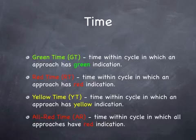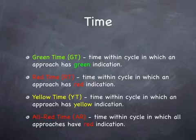Green time is the time in which the cycle has a green indication on an approach. Red time is the time in which the cycle has a red indication. Yellow time is the time in the cycle which has a yellow indication. The all-red time is the time within the cycle in which all approaches have a red indication.